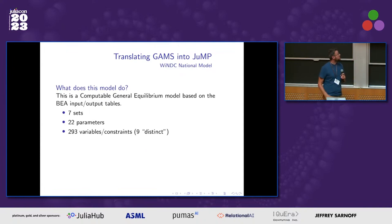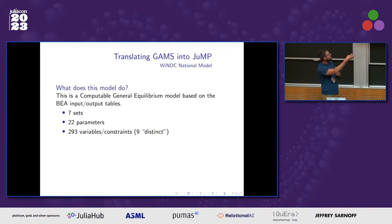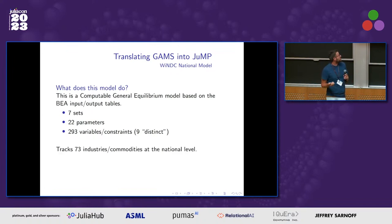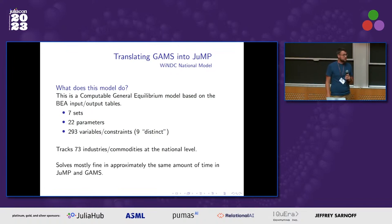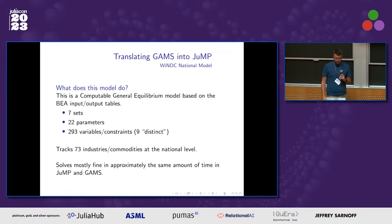The WinDC national model is actually one of our smaller models: seven sets, 22 parameters, 293 variables — nine of those variables are distinct. Variables and constraints are paired because it's a complementarity problem. It tracks 73 industries and commodities at the national level. It solves mostly fine in JuMP. There's one year — 1997 — that for some reason just gives the trivial all-zeros solution when it shouldn't. Still debugging that one. But all the other years give the same solution as GAMS, which is spectacular.